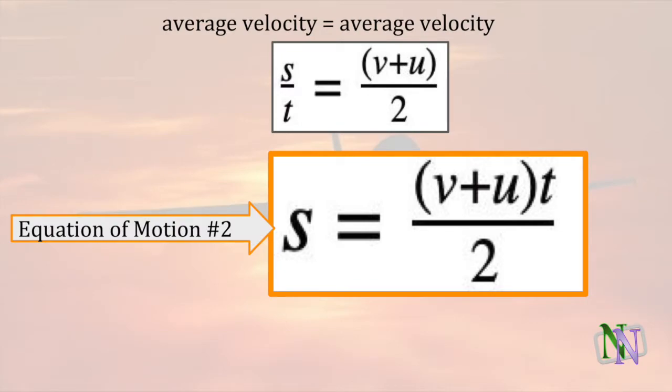Another equation of motion is found by equating two formulas for average velocity. This is the equation which does not include acceleration A. S equals V plus U times T over 2.